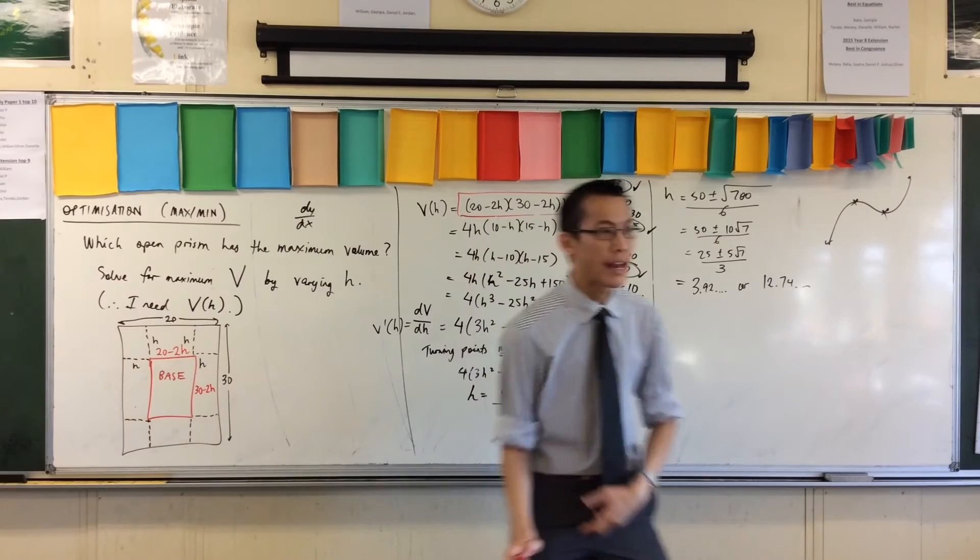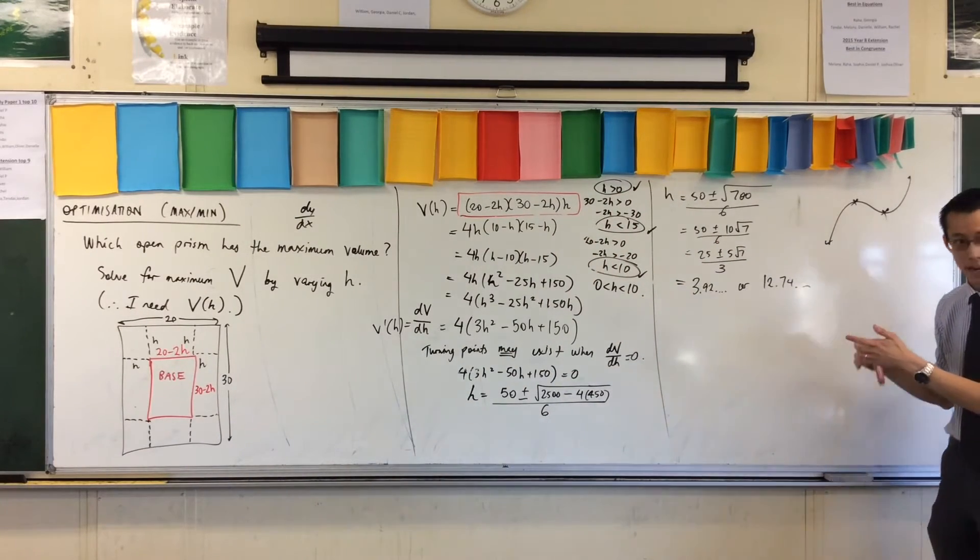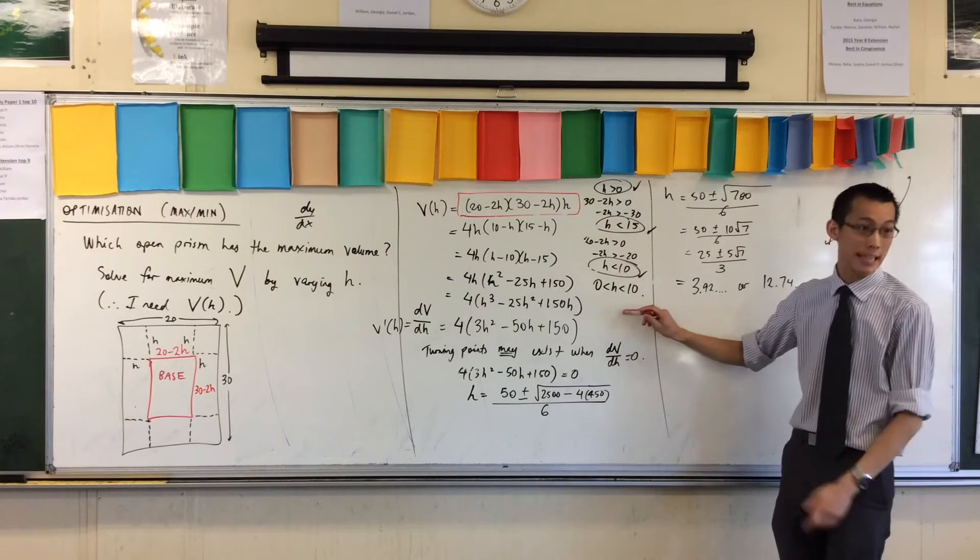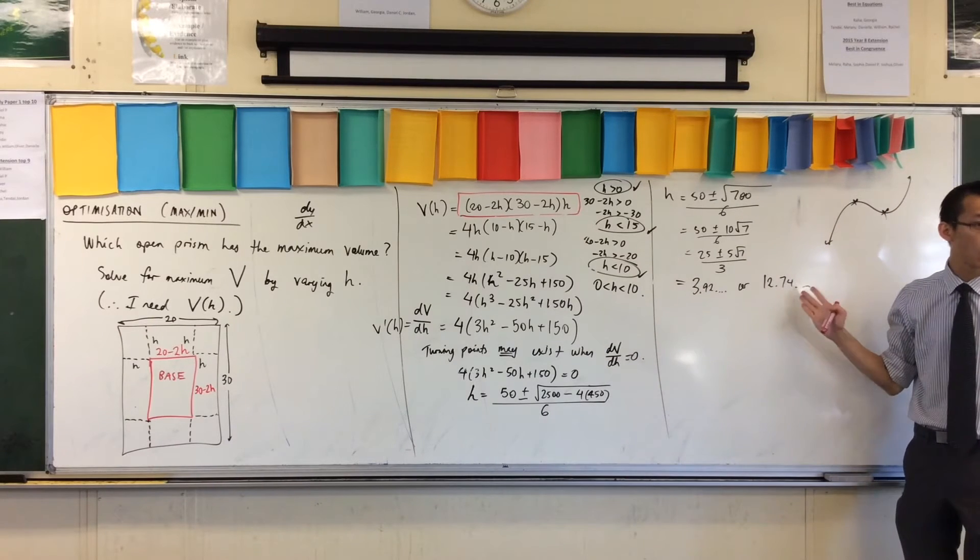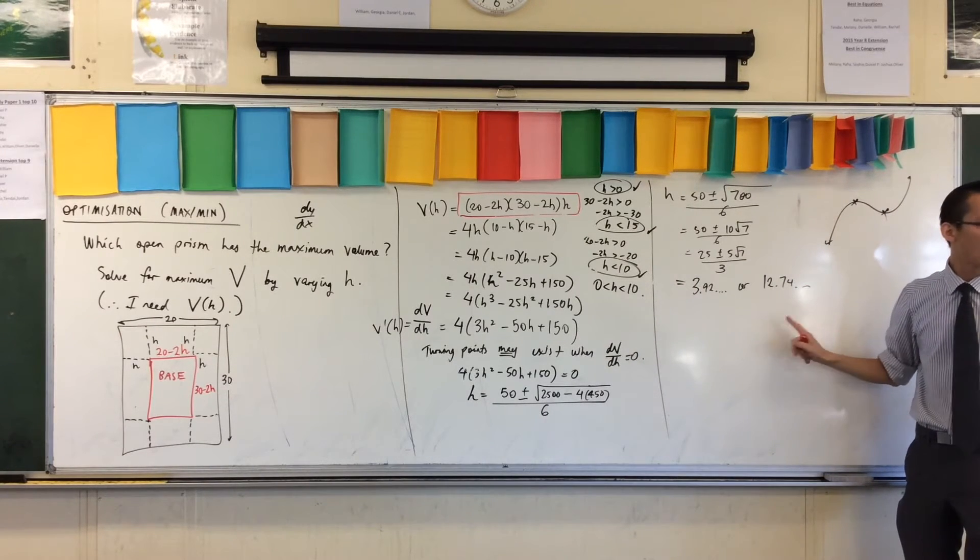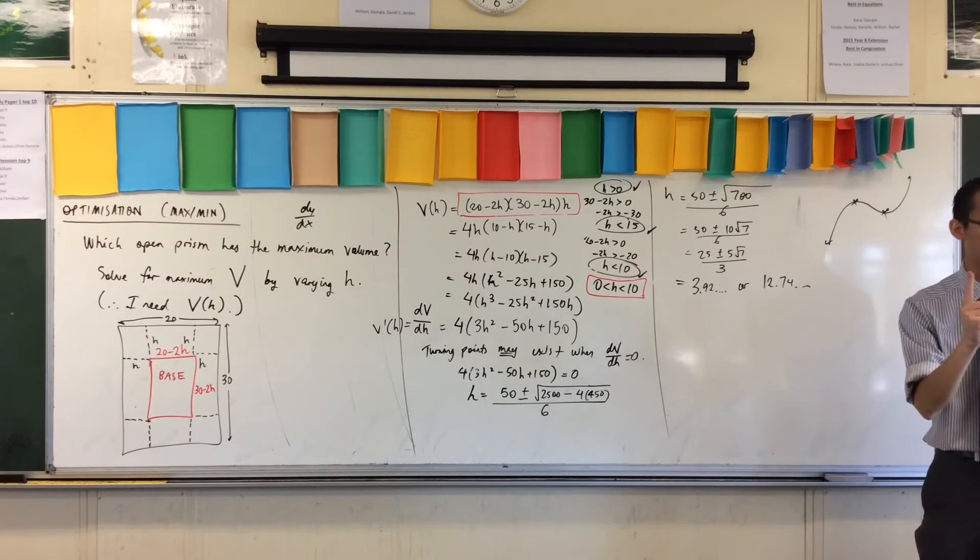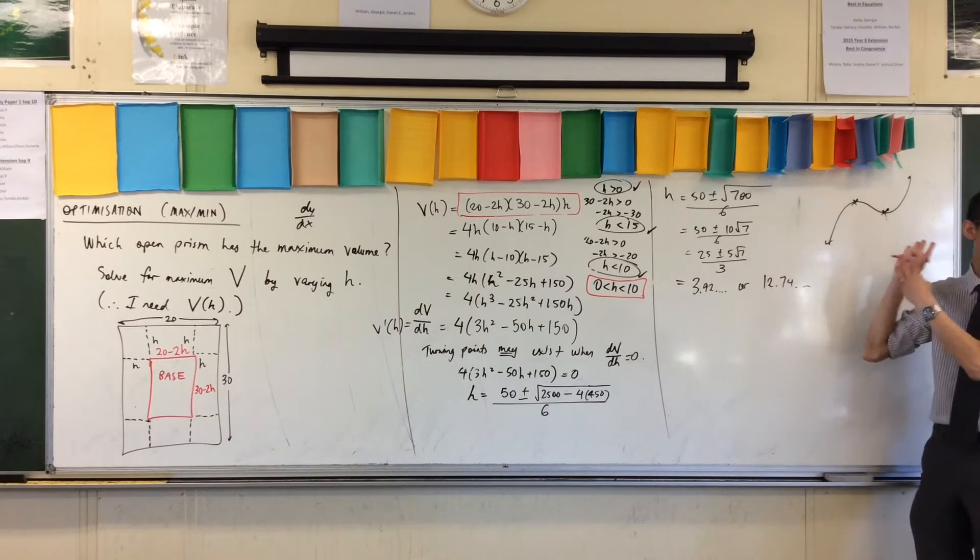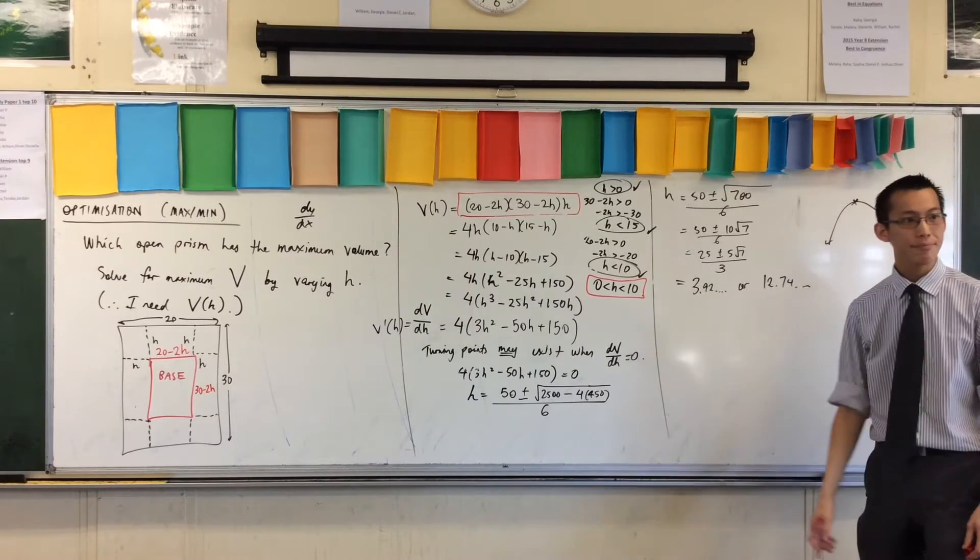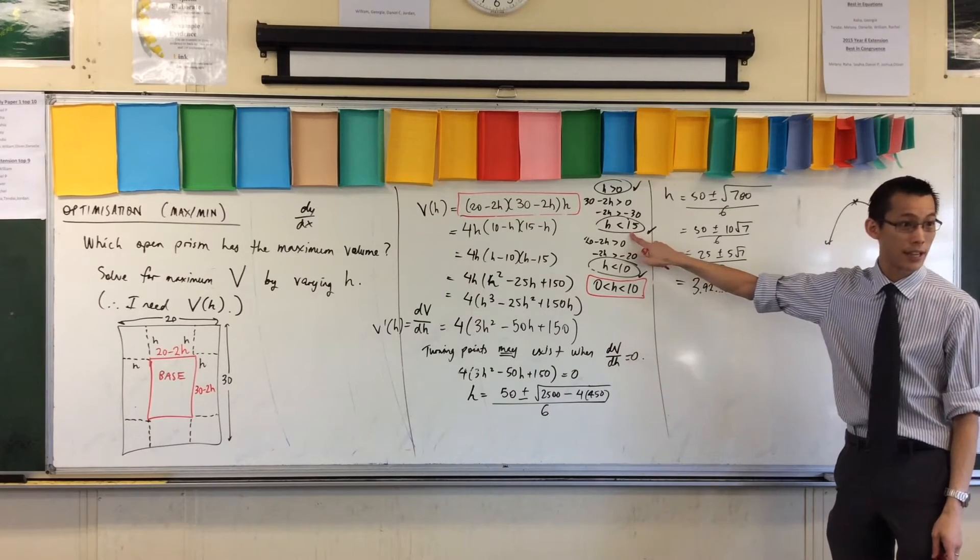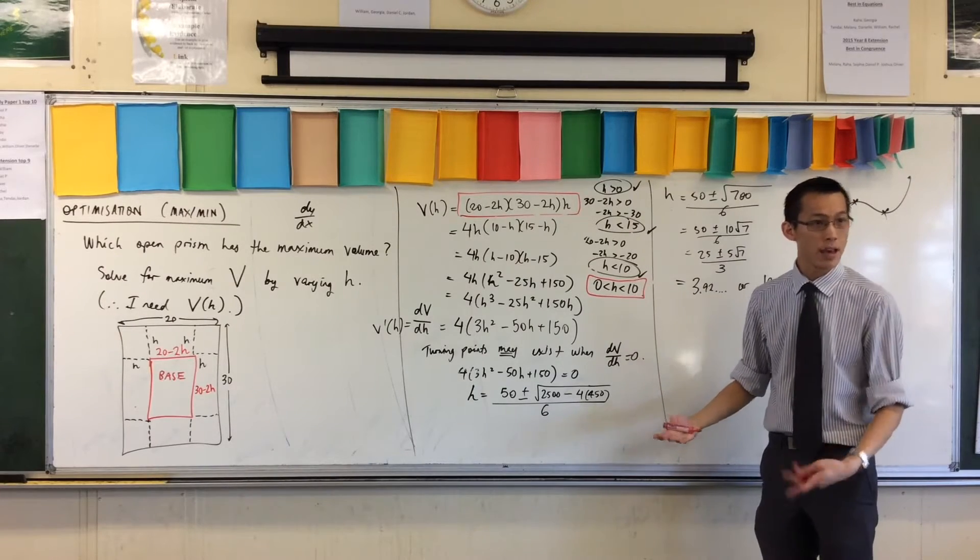Because this one is, if you like, it's more strict. It brings me in closer. So when I think about this one and this one and this one, my actual domain restriction is zero is less than H is less than 10. Why are you not using the H is less than 15? I am using the H is less than 15, but H is less than 10 is more restrictive.